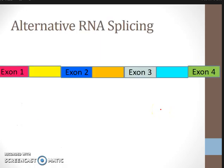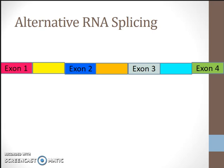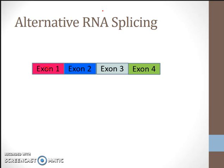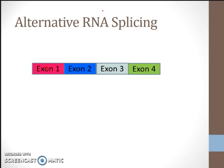One of those ways is alternative RNA splicing. With alternative RNA splicing, different enzymes can determine what is considered to be exons and what is considered to be introns. These areas represent the introns. In alternative RNA splicing, we can cut out the introns, and now we're left with exons. But how we do this can be different each time.